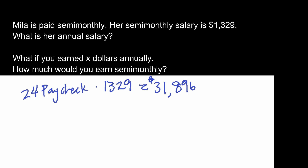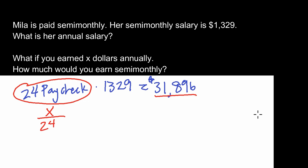The algebraic part: if you earn X dollars annually, how much would you earn semi-monthly? We work the problem backwards — if you make X dollars per year and break it into 24 paychecks, the answer is X divided by 24.